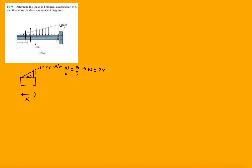Now let's draw the forces. We know there are internal forces here — we have V1 and M1. We're not drawing N anymore. There are no forces or supports on this free end, which is why I'm looking at this side — so I do not have to solve for any reaction forces. All we need is the resultant force of this distributed load.